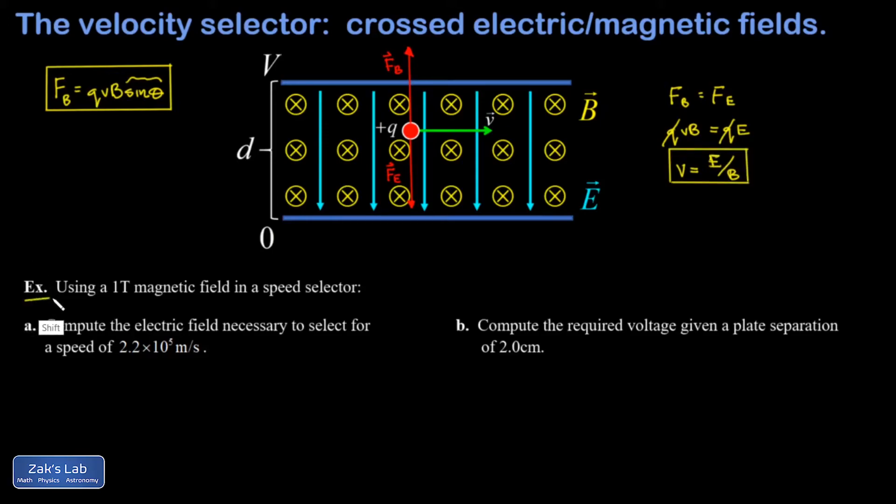Let's apply this to a simple example. So in this example, I have a one Tesla magnetic field. And I want to compute the electric field that's necessary to select for a speed of 2.2 times 10 to the fifth meters per second. So we're just turning around our speed selector formula a little bit.